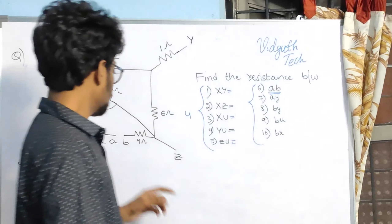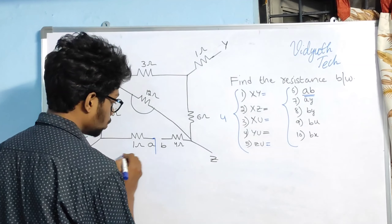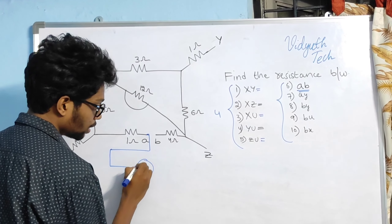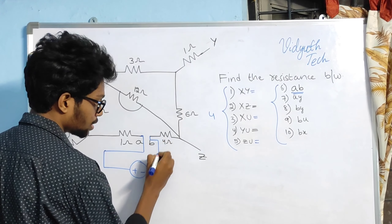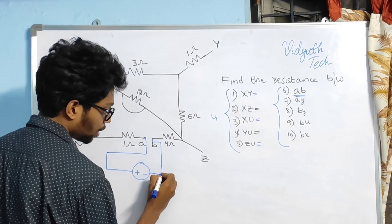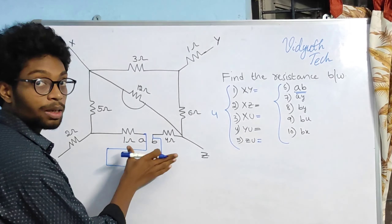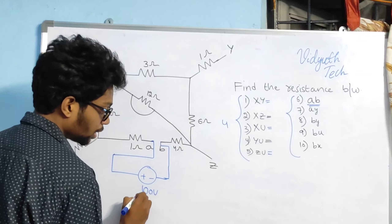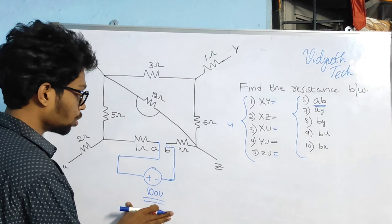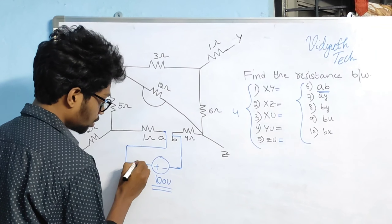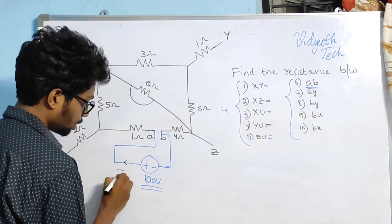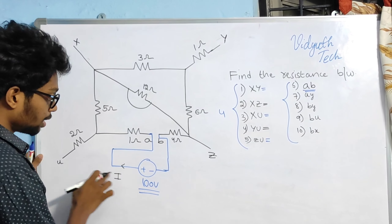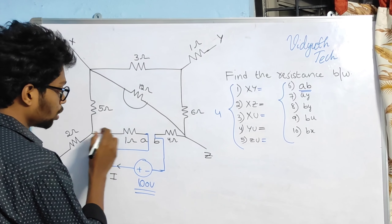This is terminal A and terminal B. To avoid confusion, I am taking a voltage source between A and B terminals because I am finding the equivalent resistance between A and B. I am taking 100 volts voltage source. You can take any value, it doesn't matter. Here comes the current I, in this path because current always flows from positive to negative. Current will flow through 1 ohm resistance.